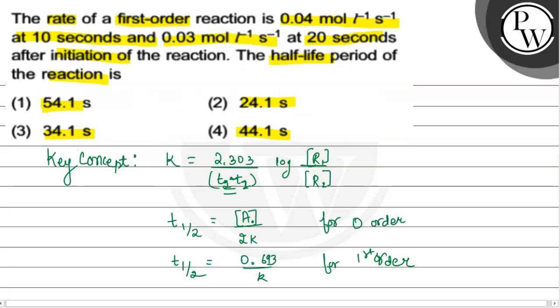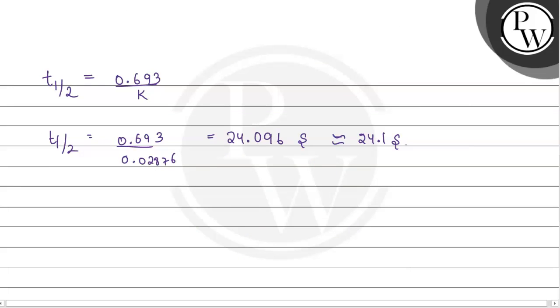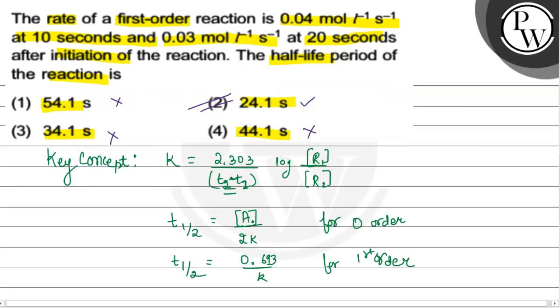Now we check the options. First is 54.1 seconds, it is wrong. Second, 24.1 seconds, yes it is correct. Third is 34.1 seconds, wrong, and fourth is 44.1 seconds, wrong. So the correct answer for the half-life period of the reaction is option 2, that is 24.1 seconds, as it is most appropriate and close to the value 24.096 seconds that we got on calculation.